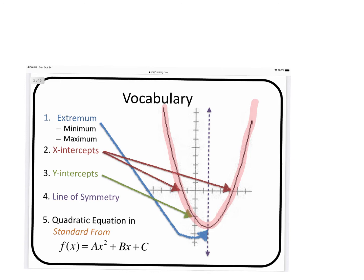We're going to take a look at the extremum. When we say extremum, that is going to be a minimum or a maximum of a parabola. This particular parabola has a minimum — it has a valley, so there's a minimum point right there. An example of a maximum would be a parabola shaped like an upside-down U, with a maximum point at the top. Think of it like a roller coaster: minimum is the very bottom of a valley, maximum is the very top of a mountain before you go plummeting down.